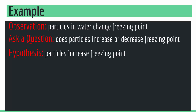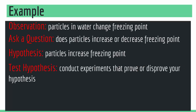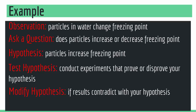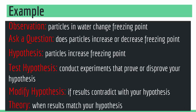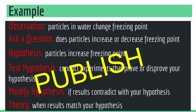Our hypothesis is: particles increase the freezing point. We observed, asked the question, then made a hypothesis. But this hypothesis is not based on anything — we have no data and it is not backed by any evidence. So we have to run tests and experiments to see if our hypothesis is true. We conduct experiments that prove or disprove that particles increase the freezing point. If our results contradict our hypothesis, we modify it. If they match, we get a theory. When we get our theory, we publish our results.